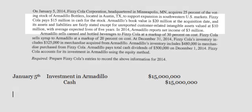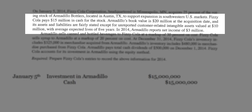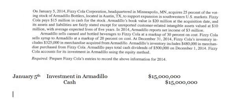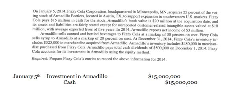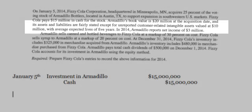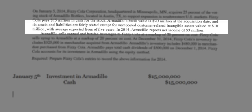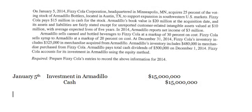Armadillo's book value is $20 million at the acquisition date, and its assets and liabilities are fairly stated. That should give you some pause because the book value is $20 million and we're buying 25% — 25% of $20 million should be $5 million, but yet we paid $15 million. That suggests there are assets that Armadillo doesn't have recorded but that we find valuable. The sentence continues: except for unreported customer-related intangible assets valued at $10 million, with average expected lives of 5 years. So we did pay extra to get 25% of that intangible asset, and since it has a stated useful life, we are going to need to amortize our part of that.